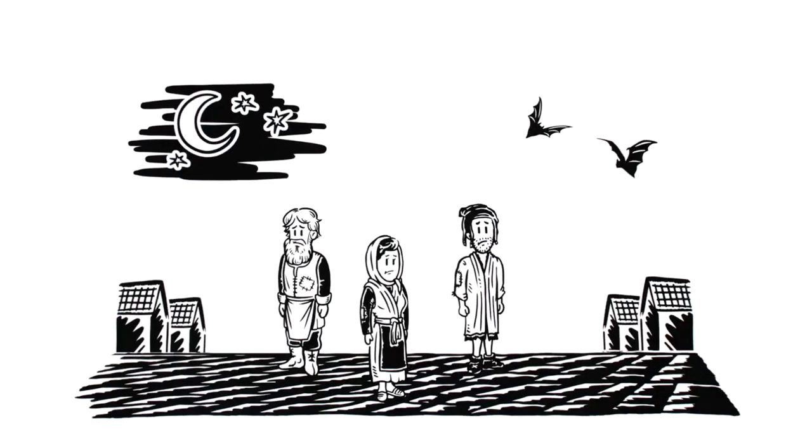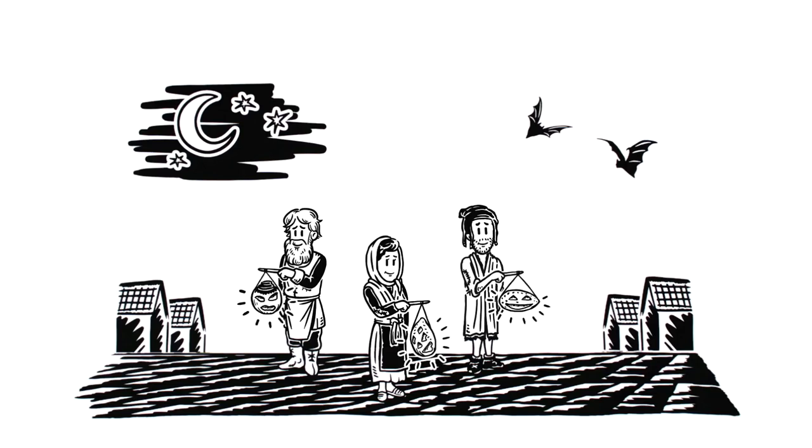In addition, they carried vegetable lanterns, carved from turnips or potatoes, which later became the well-known pumpkin lights.